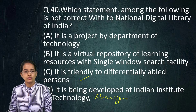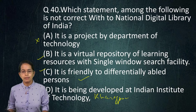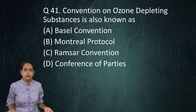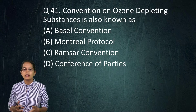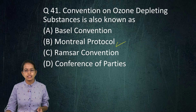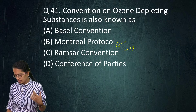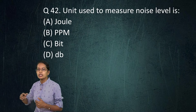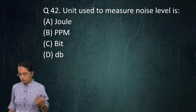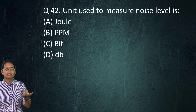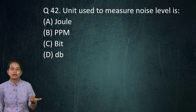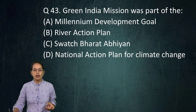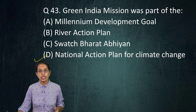For the National Digital Library question, all three options are correct so option A is the incorrect one. Ozone depletion is addressed by the Montreal Protocol — a direct question. The Ramsar Convention covers wetlands. Noise is measured in decibels; PPM measures particulate matter concentration for pollution levels.